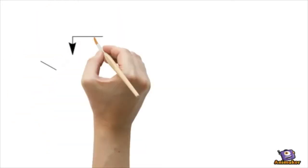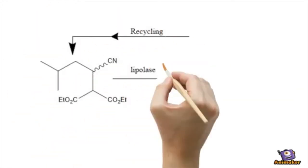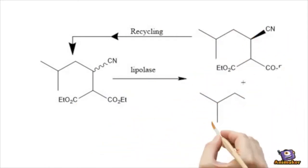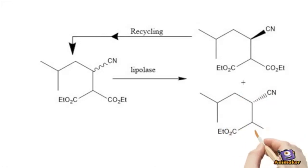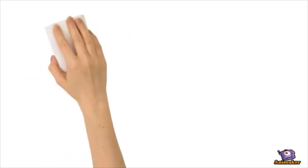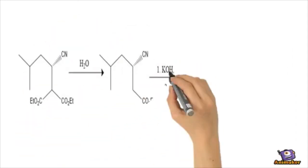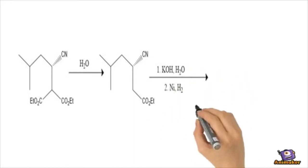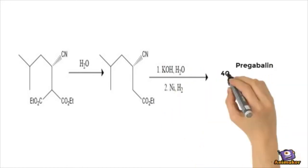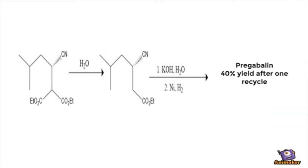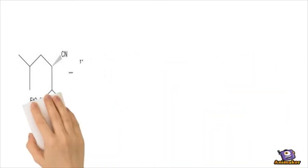Racemic CNDE with a high substrate loading was enantioselectively hydrolyzed with lipolase to form the non-polar R enantiomer and the desired polar S monoacid. The difference in polarity allowed the R enantiomer to be separated and recycled back to CNDE, which is the starting material. This left the desired S enantiomer, which in water becomes CNE, then undergoes basic hydrolysis and nickel-catalyzed hydrogenation, forming pregabalin in 40% yield after only one recycle.